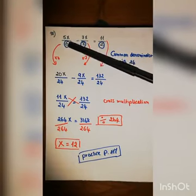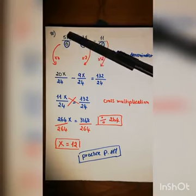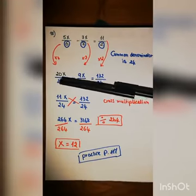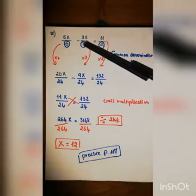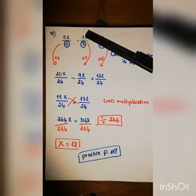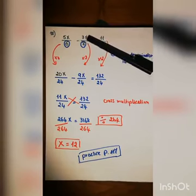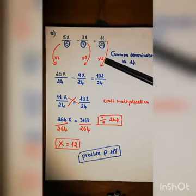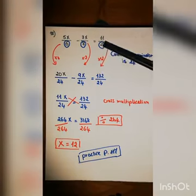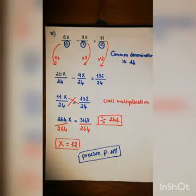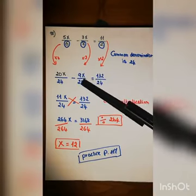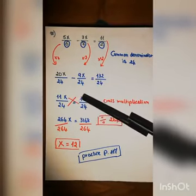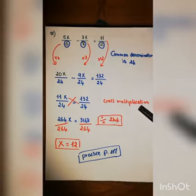To fix the denominator six, multiply by four: five x times four gives twenty x, and six times four gives twenty-four. To fix eight, multiply by three: three x times three gives nine x, and eight times three gives twenty-four. To fix two, multiply by twelve: eleven times twelve gives one hundred thirty-two, and two times twelve gives twenty-four. Now we have twenty x over twenty-four minus nine x over twenty-four equals one hundred thirty-two over twenty-four.